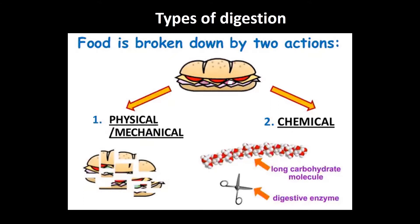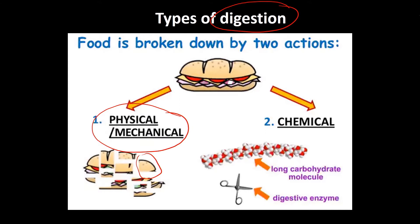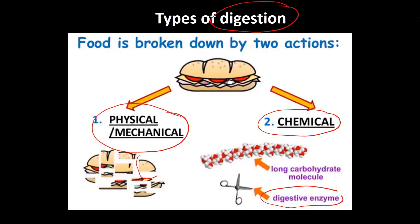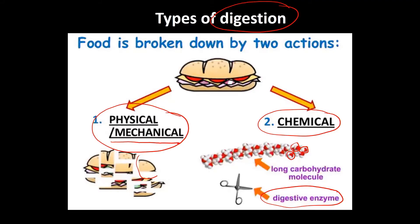There are two different types of digestion. Food is broken down firstly by physical or mechanical means — that's what happens when you chew something, breaking food into smaller pieces. Then, once it's in our digestive system, it undergoes chemical digestion by means of digestive enzymes, which act on large molecules and break them into smaller molecules our bodies can use. Physical digestion has to happen first, followed by chemical digestion.